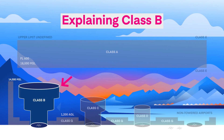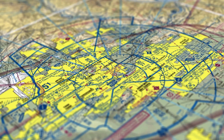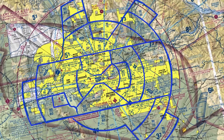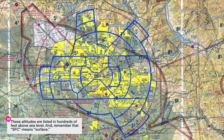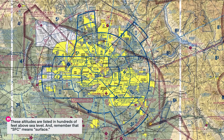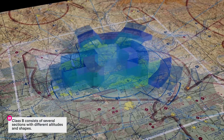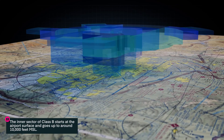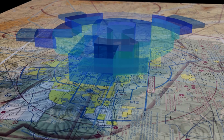Next up is Class B airspace, or Class Bravo. Class B is around the 37 busiest airports in major cities. You will find Class B depicted on a sectional chart using a solid blue line. Each sector has an altitude block with a floor and a ceiling. These altitudes are listed in hundreds of feet above sea level. Remember that SFC stands for surface. If you look at Class B airspace in 3D, it looks like an upside-down wedding cake. This is because it consists of several sections with different altitudes and different shapes. The inner sector of Class B starts at the surface and goes up to around 10,000 feet MSL. Sectors further out will have a higher base, allowing traffic to fly underneath.